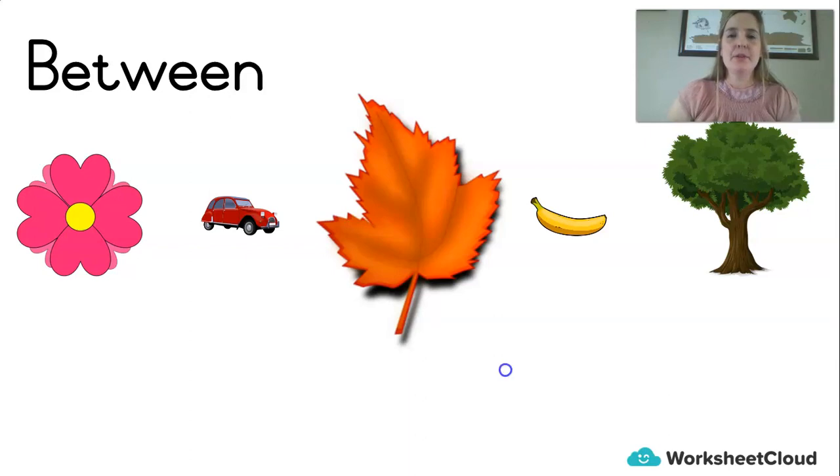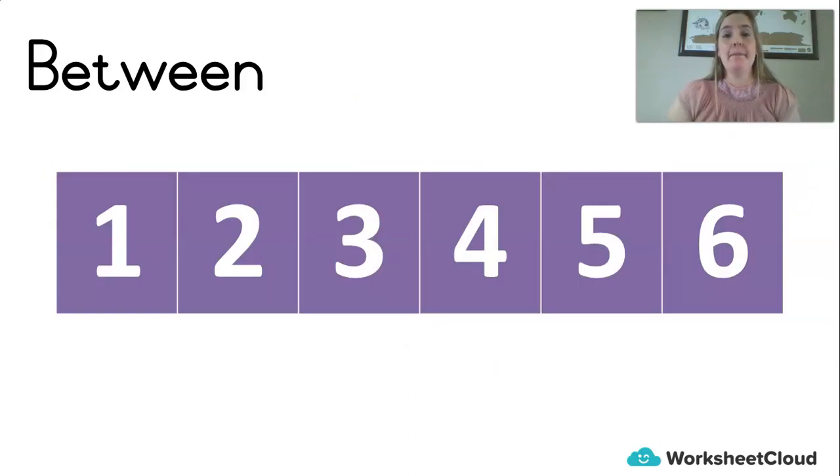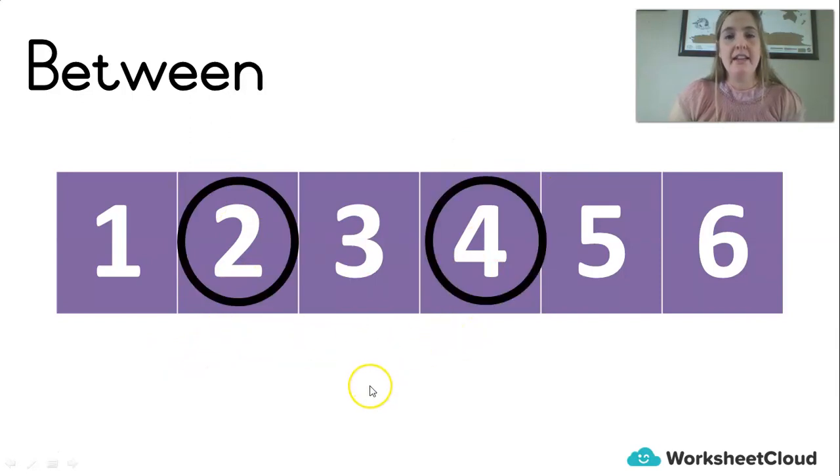And in maths, we mostly use this when we're referring to numbers. So if I say to you, what number is between the 2 and the 4? Now first you have to go and look. Where's the 2? Where's the 4? And then we can easily see what number is between. Great, the 3. Okay, awesome. So those were our new words last time: odd, even, and between. And now we're very smart about that.